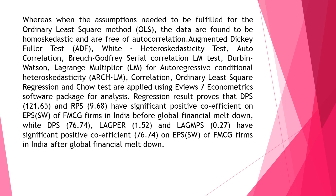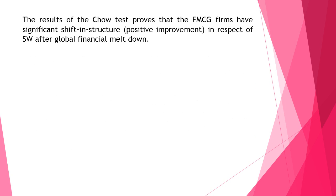Regression results prove that DPS (121.65) and RPS (9.68) have a significant positive coefficient on EPS (SW) of FMCG firms in India before the global financial meltdown, while DPS (76.74) and Lag MPS (0.27) have a significant positive coefficient on EPS (SW) of FMCG firms in India after the global financial meltdown. The results of the Chow Test prove that FMCG firms have a significant shift in structure — a positive improvement — in respect of SW after the global financial meltdown.